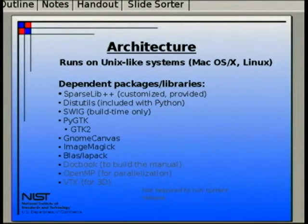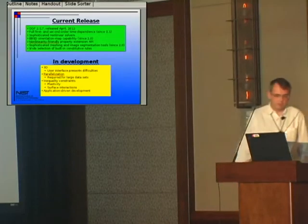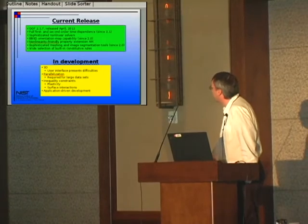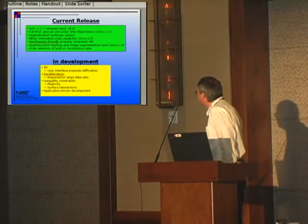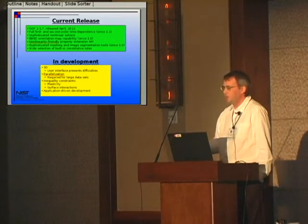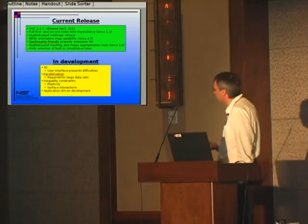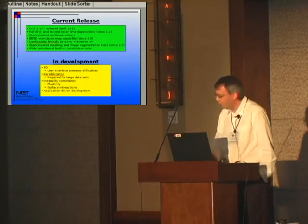The software mostly runs on Unix-like systems; there's no Windows version. The current release is 2.1.7 — it's a two-dimensional code. We have orientation sensitivity, some work with plasticity, and some fairly serious nonlinearities. The major development focus at this point is 3D, and there's also an effort going on with surface properties. When you have rapid transitions, if you can explicitly model something with a surface element, you can sometimes do better than with a full real-space model.